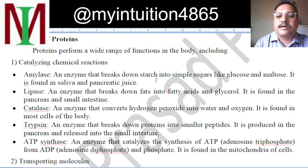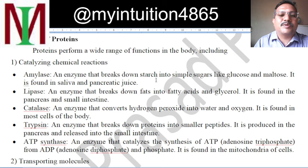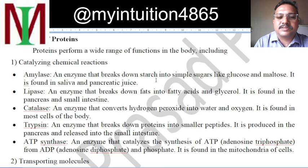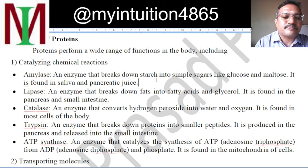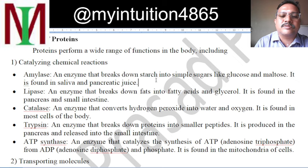That sweet taste indicates that the starch is already broken into glucose or maltose, and amylase is also present in our pancreatic juice. Lipase is an enzyme which breaks down fat into fatty acid and glycerol, and it is found in the pancreas and small intestine. Catalase is an enzyme which converts hydrogen peroxide into water and oxygen, found in most cells of the body. Trypsin is an enzyme which breaks down protein into smaller peptides, produced in the pancreas and released into the small intestine.